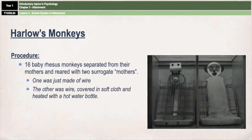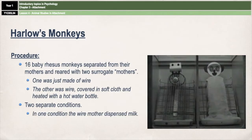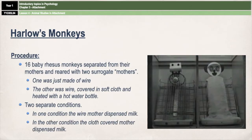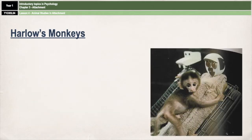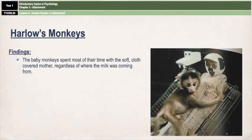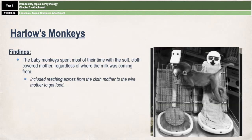His research had two conditions. In one condition the wire mother dispensed milk, and in the other condition the cloth mother dispensed milk. The researchers were interested in how long the babies would spend with each mother and how they would behave towards them. Harlow found that the baby monkeys spent most of their time with the soft cloth-covered mother, often up to 19 or 20 hours a day, regardless of where the milk was coming from. In the condition where the wire mother dispensed milk, the baby would cling to the cloth-covered mother and reach over to get food from the wire mother.